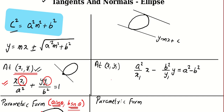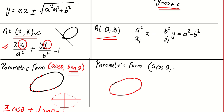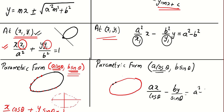Now for normals. The equation of the normal at point (x1, y1) is a²/x1 · (x − x1_term) − b²/y1 · y = a² − b². In parametric form, substitute x1 = a cosθ and y1 = b sinθ to get: ax/cosθ − by/sinθ = a² − b².